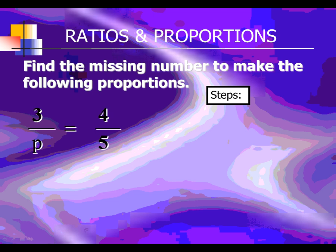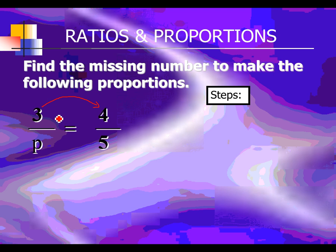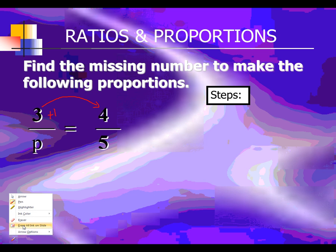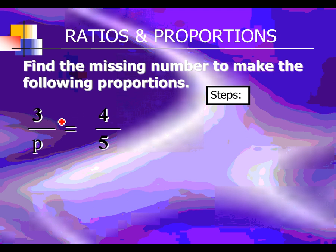Now here's one where it's not going to be so obvious. We have 3 over P equals 4 to 5. If you look at the numerators, getting from 3 to 4 is not a matter of just adding 1. Fractions don't work that way — we don't look at sums or differences, we look at factors, and factors have to be multiplied or divided. This one's not so obvious, so what we have to do is fall back on our algebra — basic one-step equation algebra, which you've learned earlier this year.